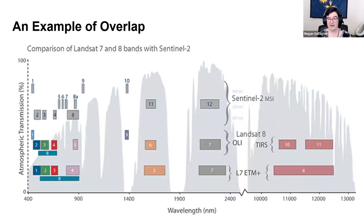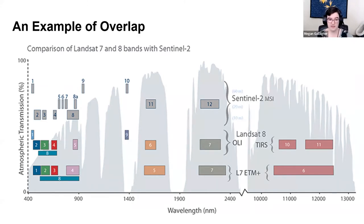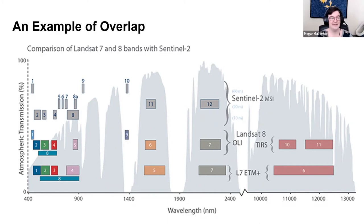Here is an example of band overlap from the USGS.gov — a comparison of Landsat 7 and 8 bands with Sentinel-2 bands. We can see how the red, green, and blue bandwidth compares, as well as further out into the spectrum. With this we can determine which bands are comparable to each other, which ones might be more difficult to match, and when certain bands don't exist at all. This is really useful information when you're starting out and trying to compare optical data.